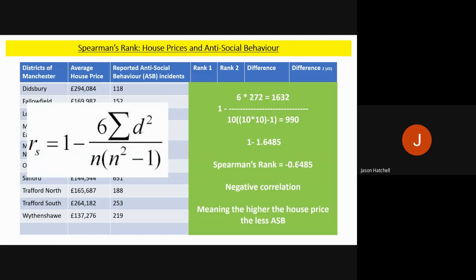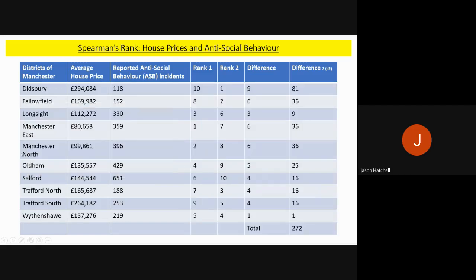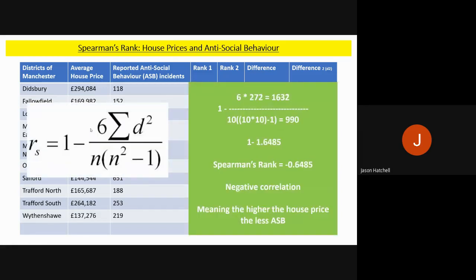Going back to the rule: the closer to −1, the more negative the relationship; the closer to +1, the more positive. Our result of −0.6485 indicates a definite negative correlation — the higher the house price, the less anti-social behaviour there is. Checking the data confirms this: Didsbury, with the highest house price, has the lowest anti-social behaviour, while Manchester East, with the lowest house price of £80,000, has a high level of anti-social behaviour. That is how you calculate Spearman's rank.